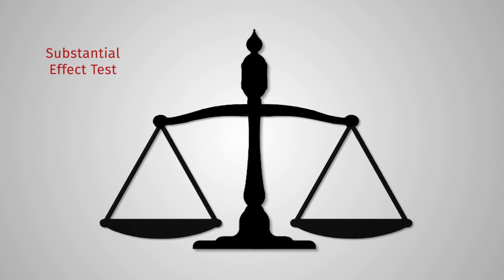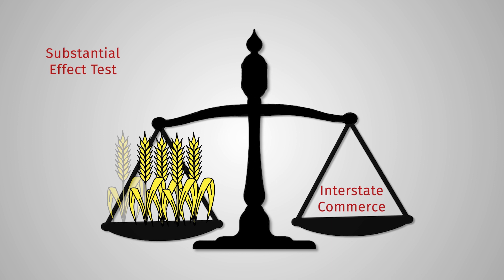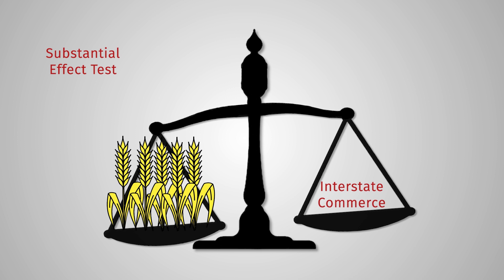Even if Filburn's small amount of locally consumed wheat did not itself have a substantial effect on interstate commerce, when all of the locally consumed wheat nationwide is considered together — in the aggregate — it has a substantial effect on interstate commerce. This doctrine is known as the aggregation principle.